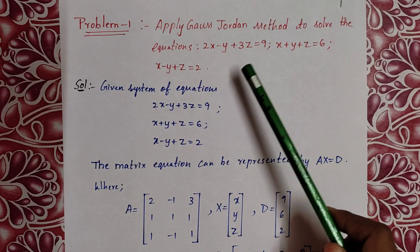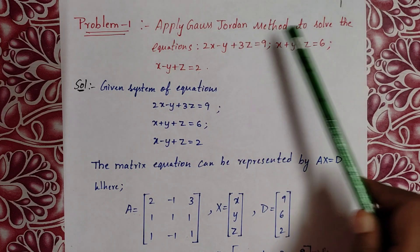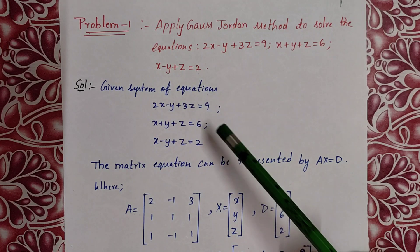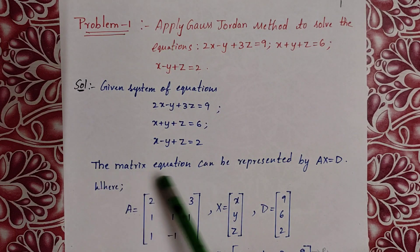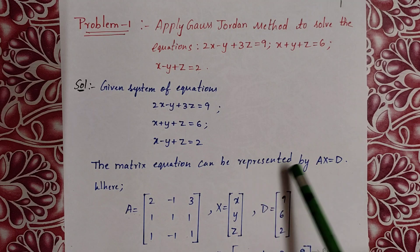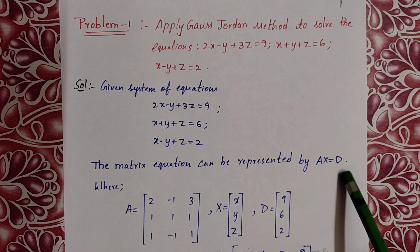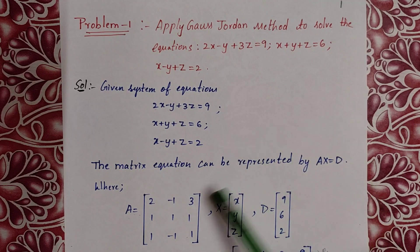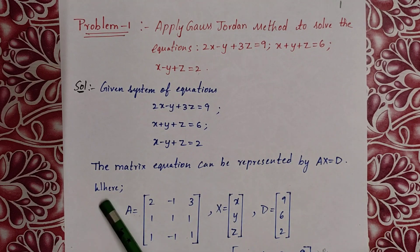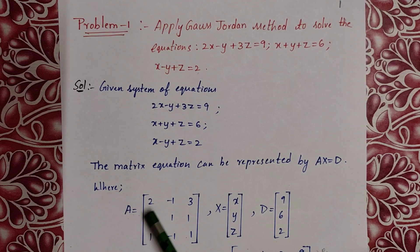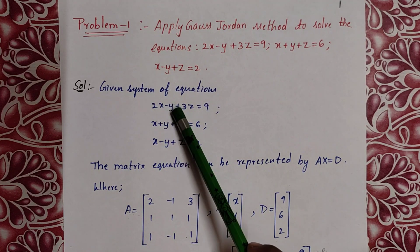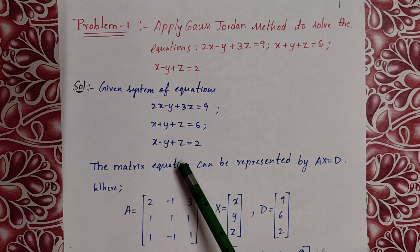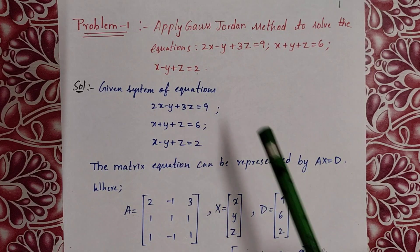Solution. Given system of equations — write 3 equations from the system. The matrix equation can be represented as AX equals D. To get the matrix A, we need to write the coefficients of x, y, z from the 3 equations.